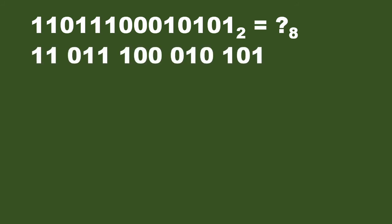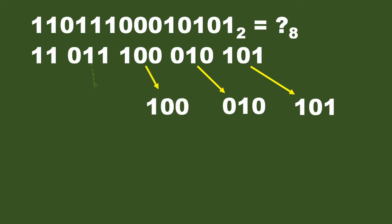The rightmost three bits — 1, 0, 1 — form the first group. Then 0, 1, 0 is the second group. Third group: 1, 0, 0. Fourth group: 0, 1, 1. The last group has only two bits — 1, 1 — so we pad it with a 0 on the left, making it 0, 1, 1. We pad on the left, not the right, because padding 0 on the left does not change the value.